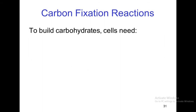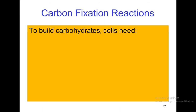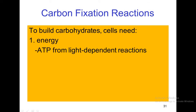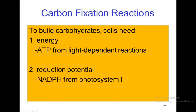Carbon fixation reactions. To build carbohydrates, cells need energy that is present in the form of ATP from the light-dependent reaction, and the second one is reduction potential that is present in the form of NADPH from Photosystem I.